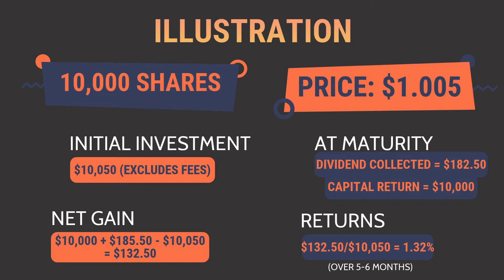In percentage terms, your return will be 1.32%. Note that this 1.32% is for only five to six months — annualized it would be more than 2.5%. This calculation excludes all brokerage commissions and fees, and assumes you hold the bond to maturity, which makes the return easily computable upfront.